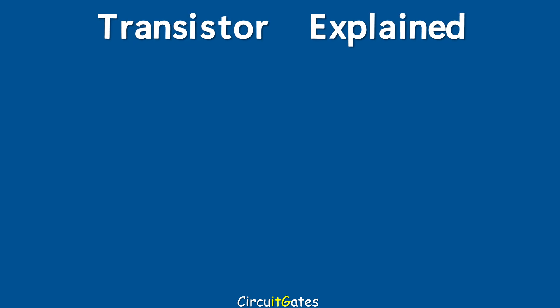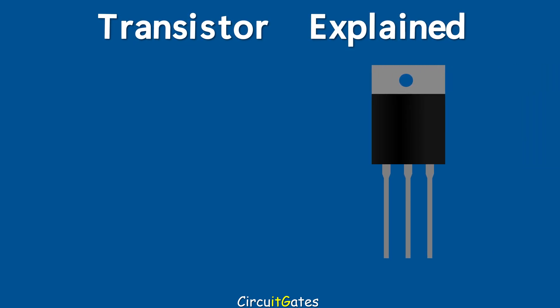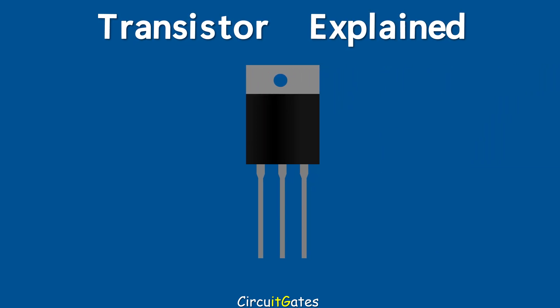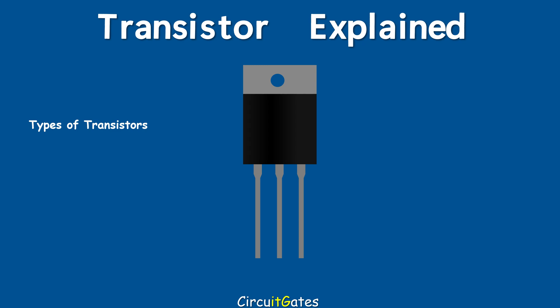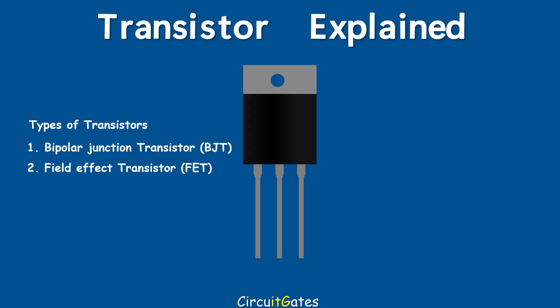Hi guys. In this video we want to look at how a transistor works. We have two main types of transistors: BJT and field effect transistors. In this video we are going to look at a BJT transistor.